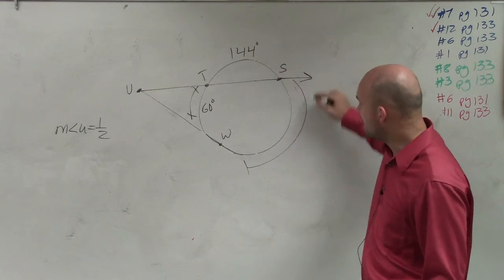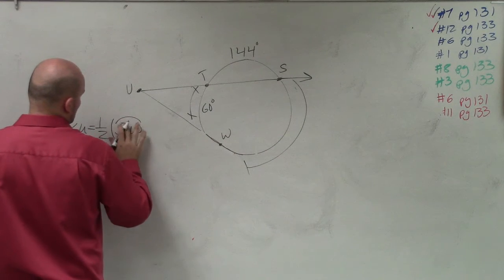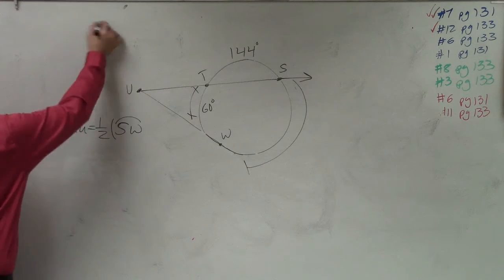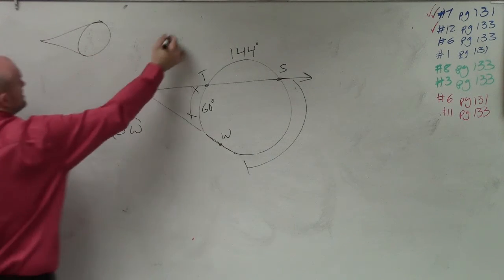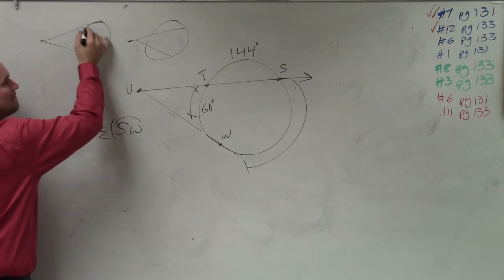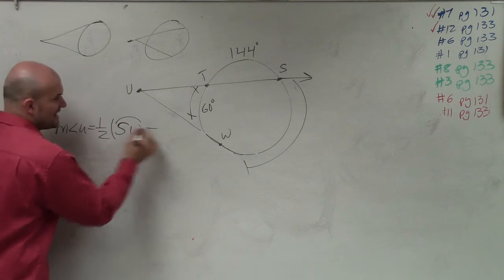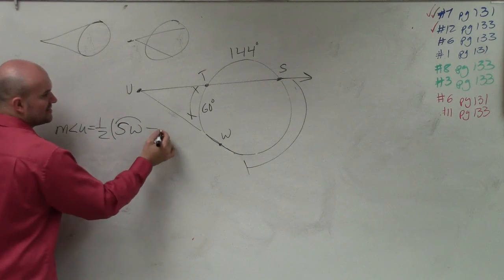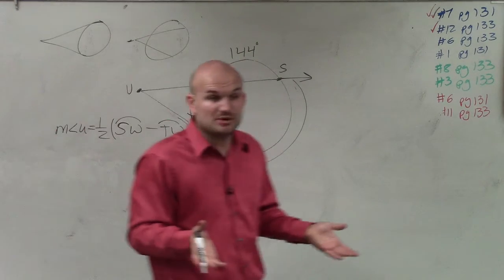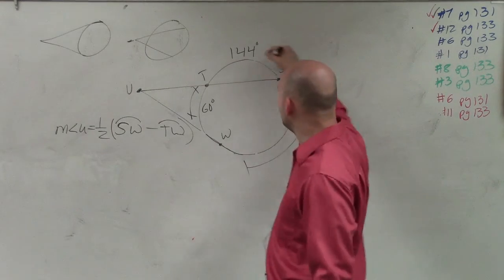So we need to figure out what arc SW is. It's always the same for any point — it doesn't matter. We dealt with two tangents and two secants; it's always the large arc minus the small arc times one half. So it's SW subtracted from arc TW. We know what TW is — that's 60 degrees. But we don't know what SW is.